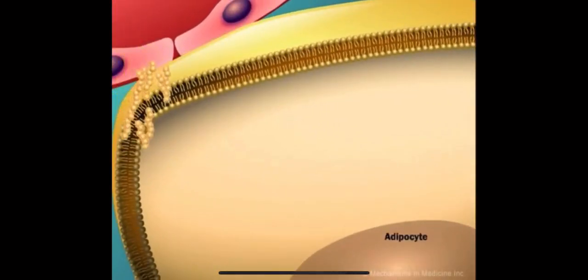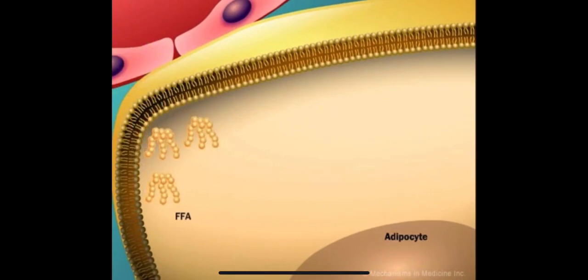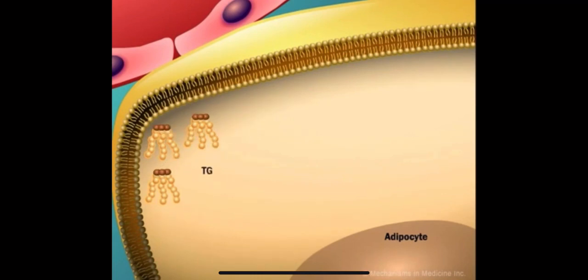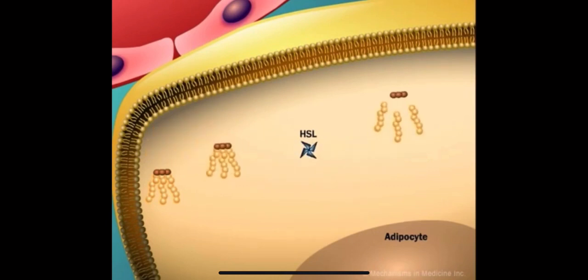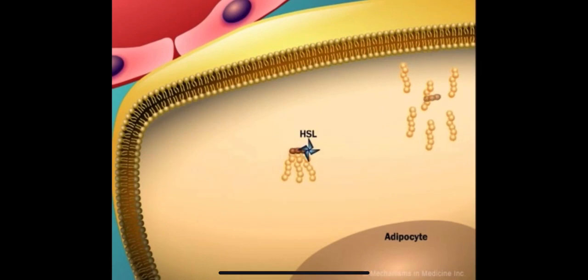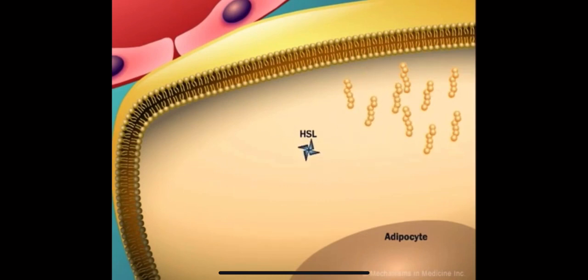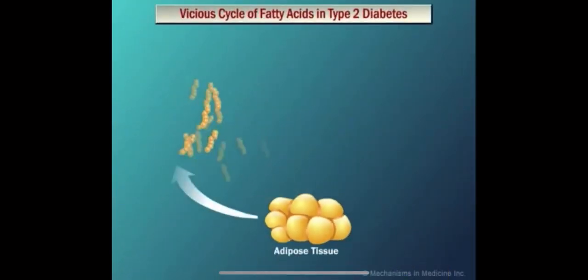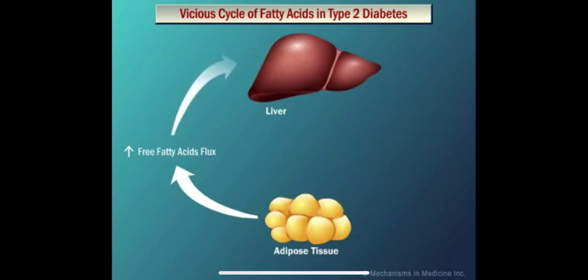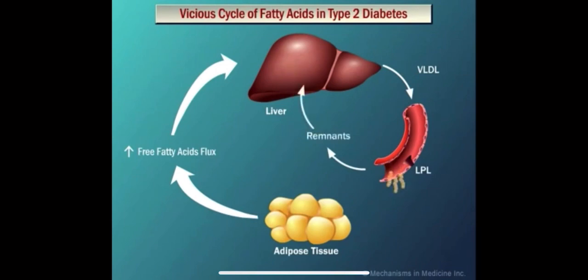Once inside the adipocyte, three molecules of free fatty acids combine with one molecule of glycerol-phosphorylcholine, or 2-monoglyceride, to form a triglyceride particle. The newly formed triglycerides are subsequently acted upon by hormone-sensitive lipase, causing them to again disassemble into free fatty acids and glycerol. As a result, the increased amount of free fatty acids is again released from the adipocyte into the blood circulation, creating a vicious cycle as they are taken up again by the liver.